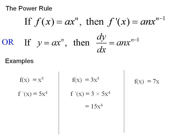Here's one more. 7x — hang on a minute. 7x is 7x to the 1. Taking the derivative, the 7 stays there. 1 comes down in front, and 1 minus 1 is 0. So x to the 0 is 1. 7 times 1 is 7.